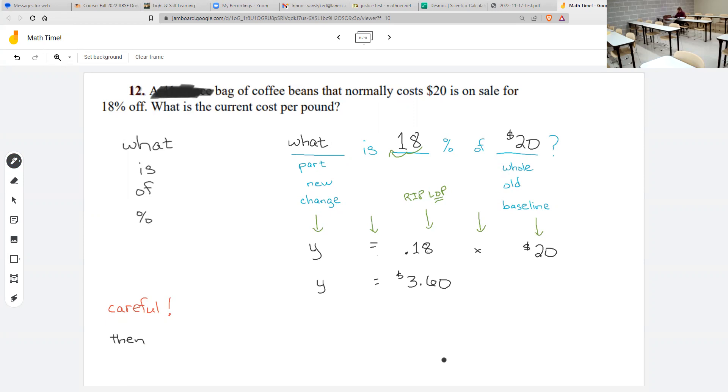So 3.60 is the discount amount, we know the old price. How do we find the new price? If I take away four that would be 16 bucks, but I don't take away all of four, so oops.